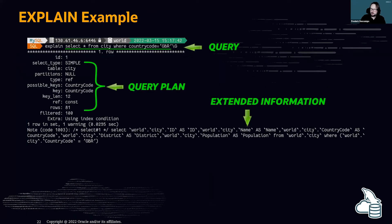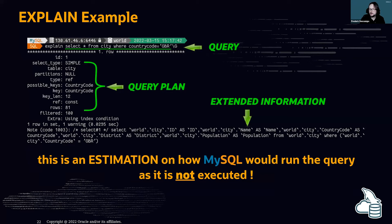Let's run EXPLAIN on a simple query: SELECT * FROM city WHERE CountryCode = 'GBR'. We can see the query plan: there is one table which is 'city', there are some indexes, only one index can be used which is CountryCode, and the optimizer estimates 81 rows will be returned. This is an estimation — the query is not actually executed.